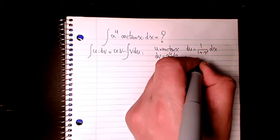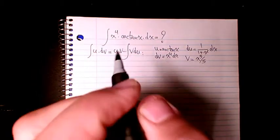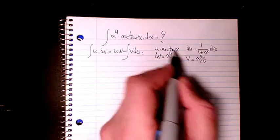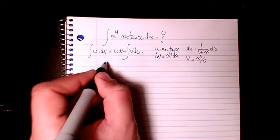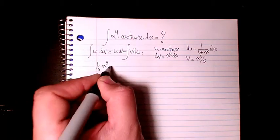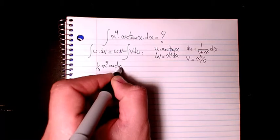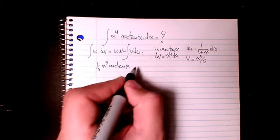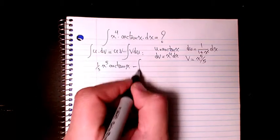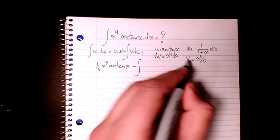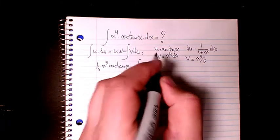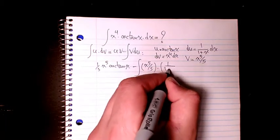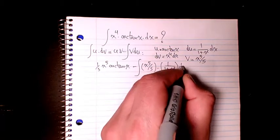So du will be 1 over (1 plus x squared) dx, and v will be x to the power of 5 divided by 5. Applying the formula: u times v is (x⁵/5) arctan(x) minus the integral of v times du, which is 1 over (1 plus x squared) dx.